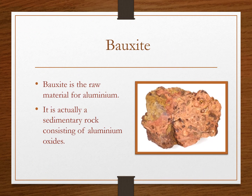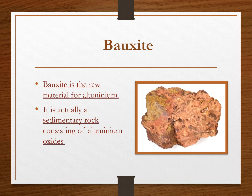Next is bauxite. Bauxite is the raw material for aluminium. It is actually a sedimentary rock consisting of aluminium oxides. It is found mainly in tertiary deposits and is associated with laterite rocks, occurring extensively either on the plateau or hill ranges of peninsular India and also in the coastal tracts of the country.